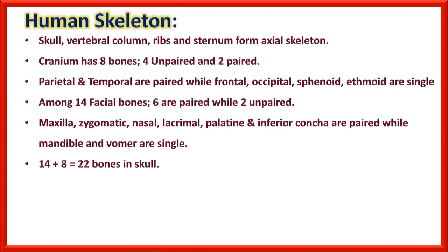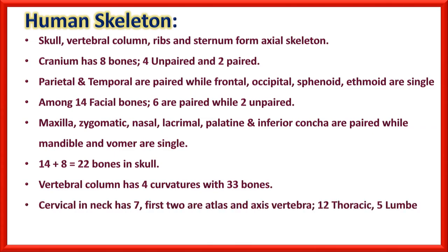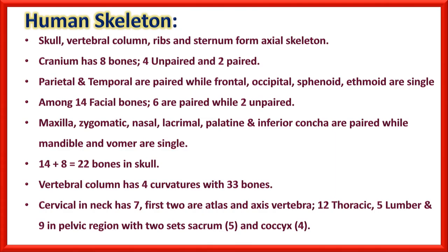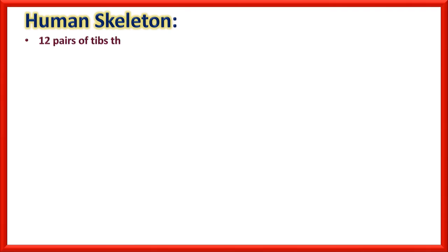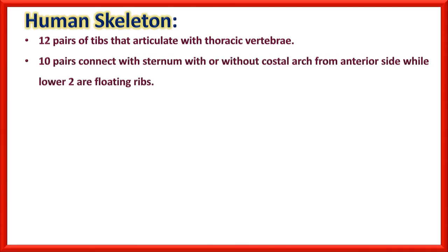14 plus 8 equals 22 bones in the skull. The vertebral column has four curvatures with 33 bones. The cervical region in the neck has seven vertebrae; the first two are the atlas and axis. There are twelve thoracic and five lumbar vertebrae, and nine in the pelvic region — sacrum (five fused vertebrae) and coccyx (four fused vertebrae). Twelve pairs of ribs articulate with thoracic vertebrae; ten pairs connect with the sternum, while the lower two are floating ribs.